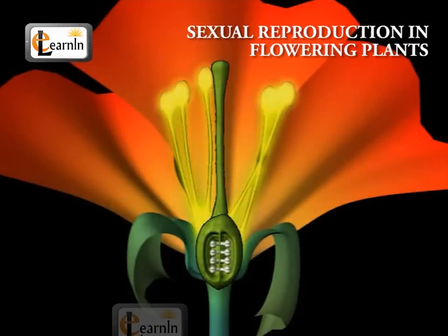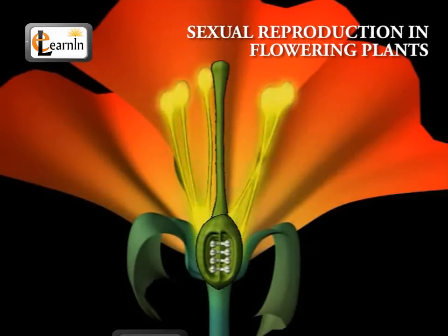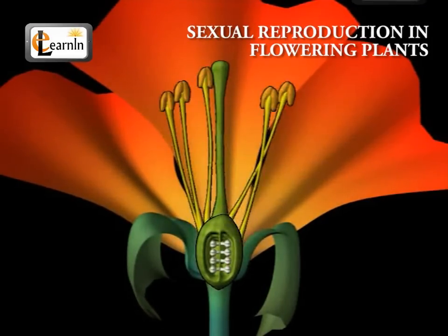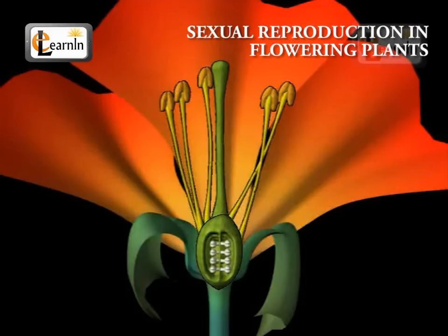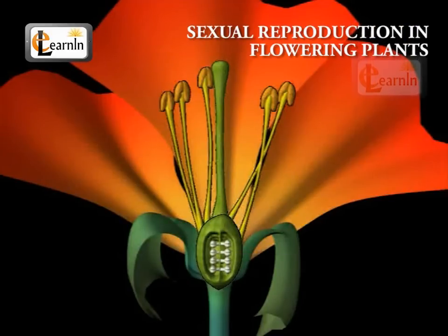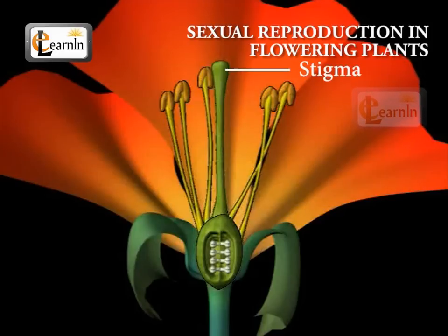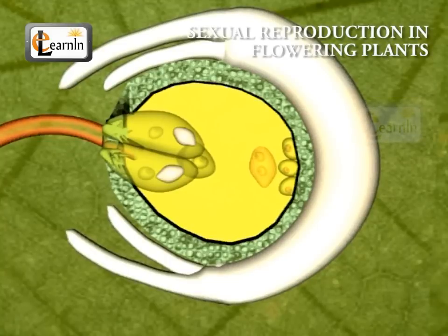The stamen is the male reproductive part, and it produces pollen grains that are yellowish in color. Carpels are present in the center of the flower and are the female reproductive part. It is made up of three parts: the swollen bottom part is the ovary, the middle elongated part is the style, and the terminal part, which may be sticky, is the stigma. The ovary contains ovules, and each ovule has an egg cell.